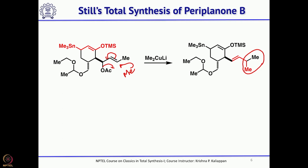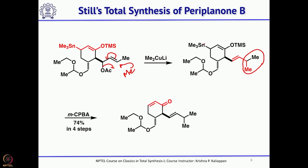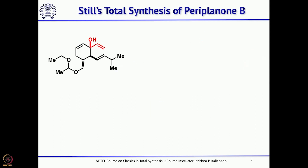To generate the ketone, MCPBA was treated with the compound. MCPBA forms the epoxide and elimination takes place to give the corresponding cyclohexenone. Once the cyclohexenone is in hand, vinyl lithium was added to give the precursor for the anionic oxy-Cope rearrangement. As you can see, the 3,3-sigmatropic arrangement is nicely positioned to give the anionic oxy-Cope product.